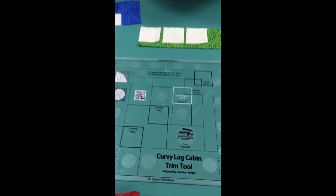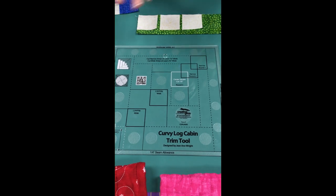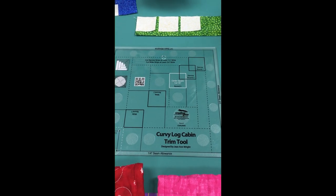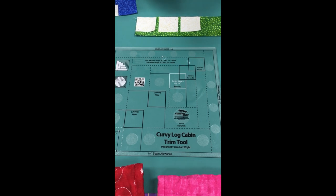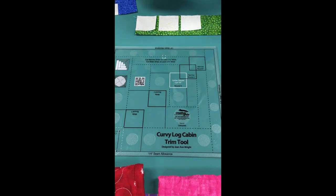The ruler in front of me is for the 8-inch finished size block. The ruler also comes in two other finished sizes: 6-inch and 4-inch. They all make Curvy Log Cabin blocks.